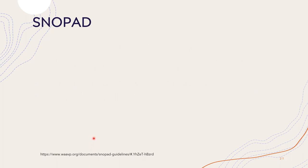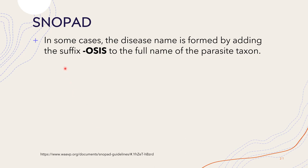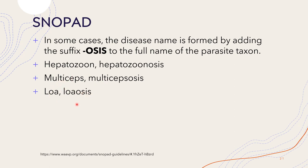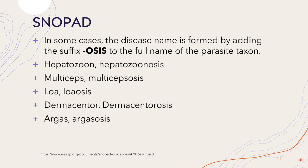In some cases, the disease name is formed by adding the suffix -osis to the full name of the parasite taxon. For example: Hepatozoon → hepatozoonosis; Multiceps → multicepsosis; Loa → loaosis; Dermacentor → dermacentorosis; Argas → argasosis; Acarapis → acarapisosis.